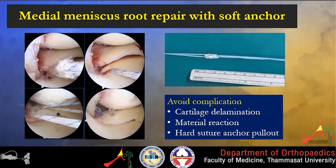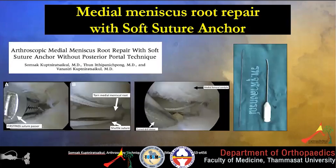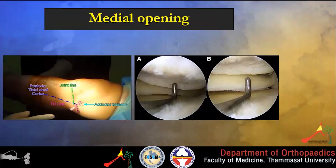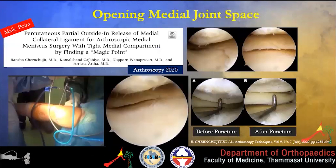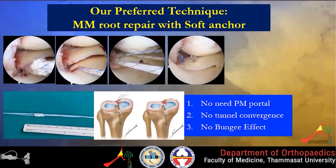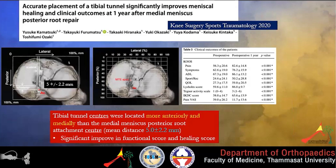Another technique is suture anchor fixation using a soft anchor. This technique can avoid complications of transtibial fixation such as cartilage damage, material reaction, and the hard suture pull-out effect. Somsak et al. proposed this technique using a flexible drill bit which can place the soft anchor more vertically. Because the medial joint space is always very tight, we propose opening the medial joint space using a 'magic point' located 1.2 cm above the joint line along the pes anserinus line. Our preferred technique is soft anchor repair — no posteromedial portal needed, no tunnel convergence problems, and no bungee effect.